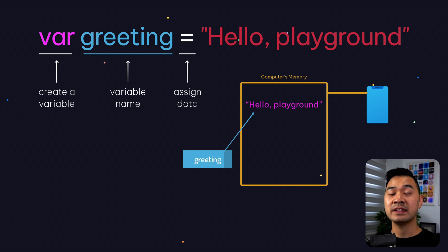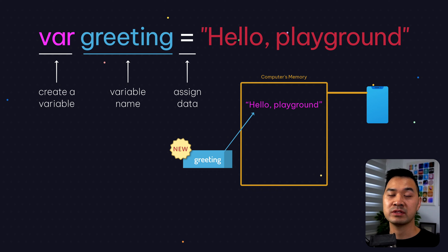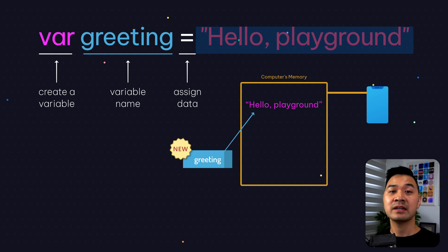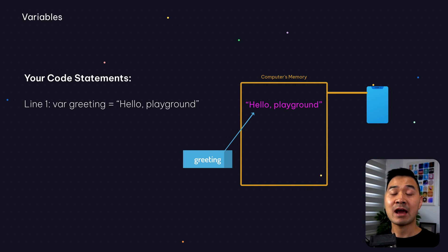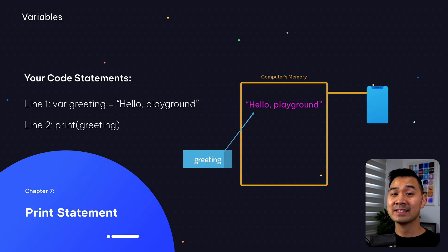The keyword `var` is a special Swift keyword that creates a new variable. Reading this entire Swift code statement from left to right, the instructions to the computer are: first, create a variable named 'greeting'; next, assign to this variable the piece of text data 'Hello, playground.' After this code statement runs, we now have a way to refer to that piece of text data in memory — anytime we want to access it we just use the variable name 'greeting.' In fact, look at the second line — this code statement prints out the text data. Let's try this out in the playground.